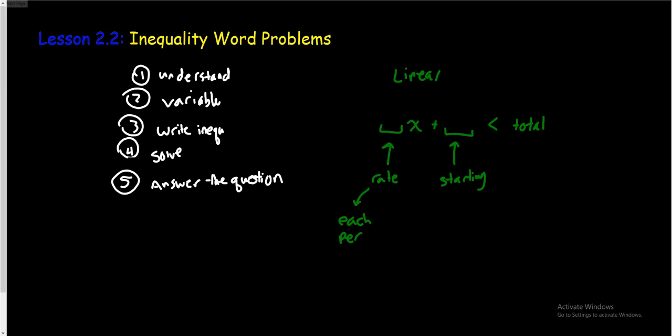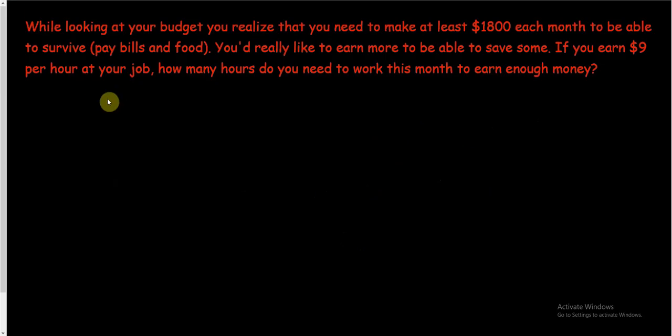Let's jump right into an example. While looking at your budget, you realize that you need to make at least $1800 each month to be able to survive, to pay your bills and have food. You'd really like to have more money to be able to save some. If you earn $9 per hour at your job, how many hours do you need to work this month to earn enough money? I think I understand this. We have a budget and we need to work some hours.